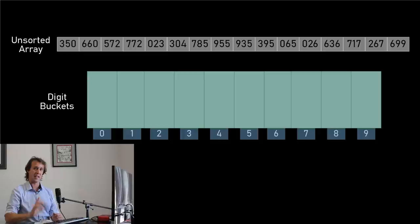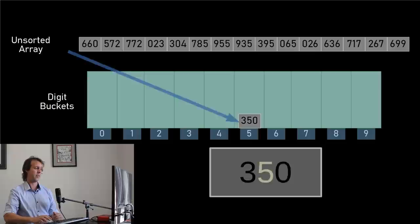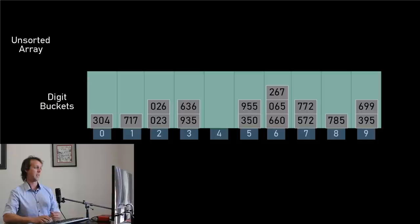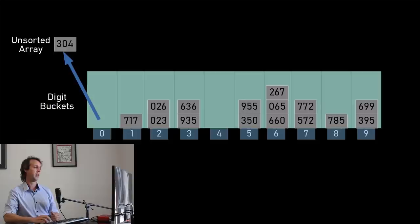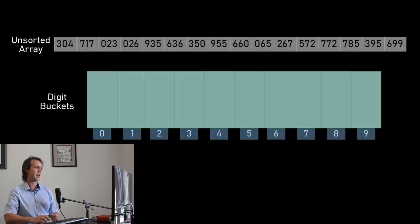For the second round we do exactly the same thing, except this time we're looking at the second digit of each number — the tens column. We start on the left: the second digit of 350 is a five, so we put 350 into the five bucket. Then 660 — the second digit is a six, so into the six bucket. 572 goes into the seven bucket. We continue until we have all our elements in the buckets corresponding to their tens digits. We collect our items back up from the zero bucket, the one elements like 717, the two bucket elements 023 and 026, and so on, all the way to 699. After two iterations our array is: 304, 717, 023, 026, etc. — still not sorted.